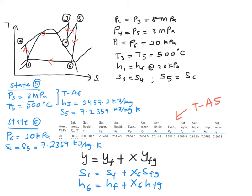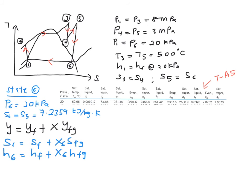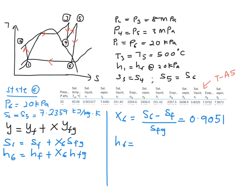So let's have a look at how you're going to solve this. Your x is equal to 0.9051. And make use of your S6 to find your h6. So finally, you will get your h6 is equal to 2385.19 kJ per kg.